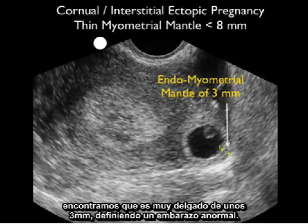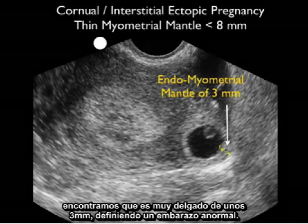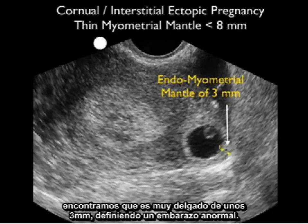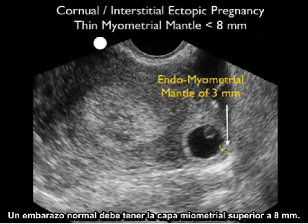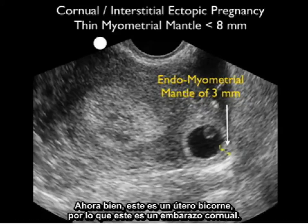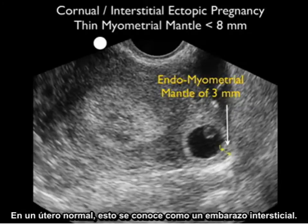we find it's very thin at three millimeters, defining an abnormal pregnancy. A normal pregnancy should have a myometrial mantle greater than eight millimeters. Now this is a bicornuate uterus, so this is a corneal pregnancy. In a normal uterus, this would be known as an interstitial pregnancy.